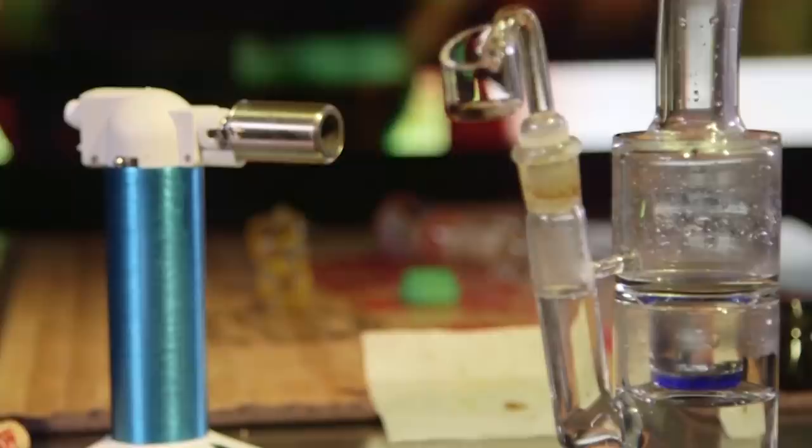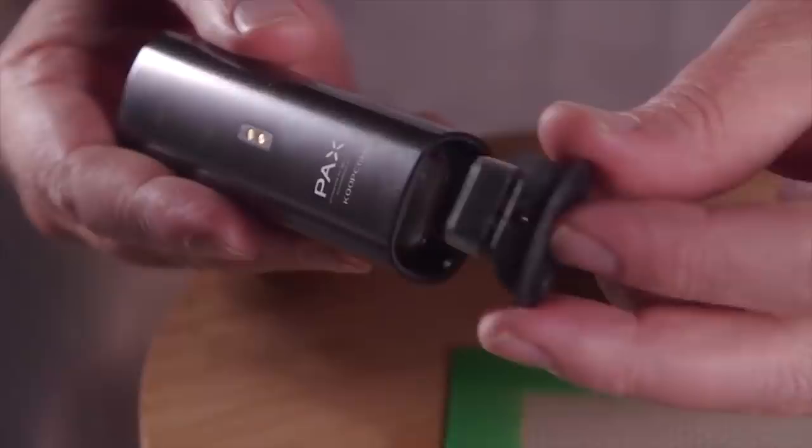Today we're going to look at several ways to smoke shatter, wax, and rosin along with the pros and cons of dab rigs and nails, dab pens, vaporizers, e-nails, and nectar collectors.